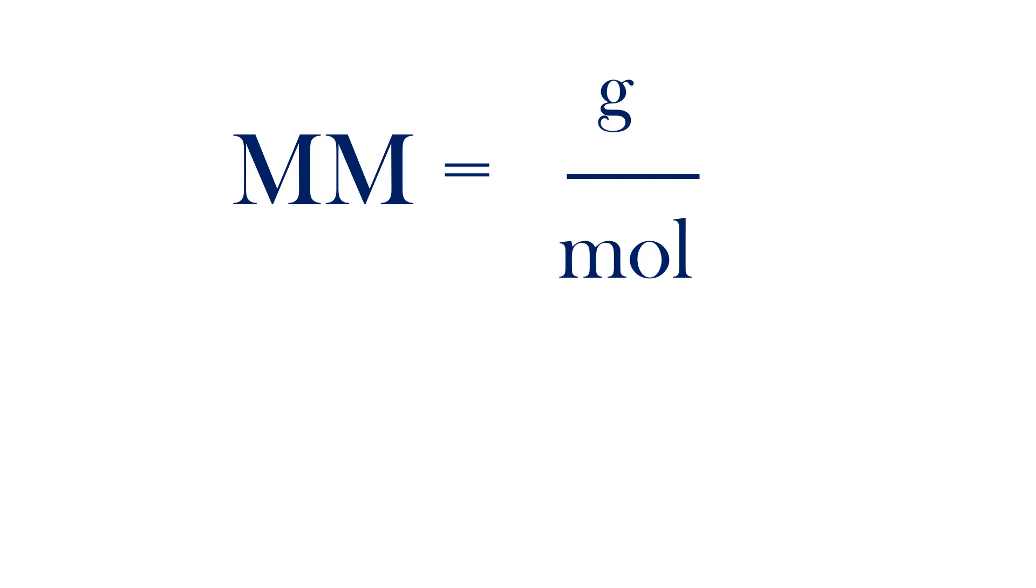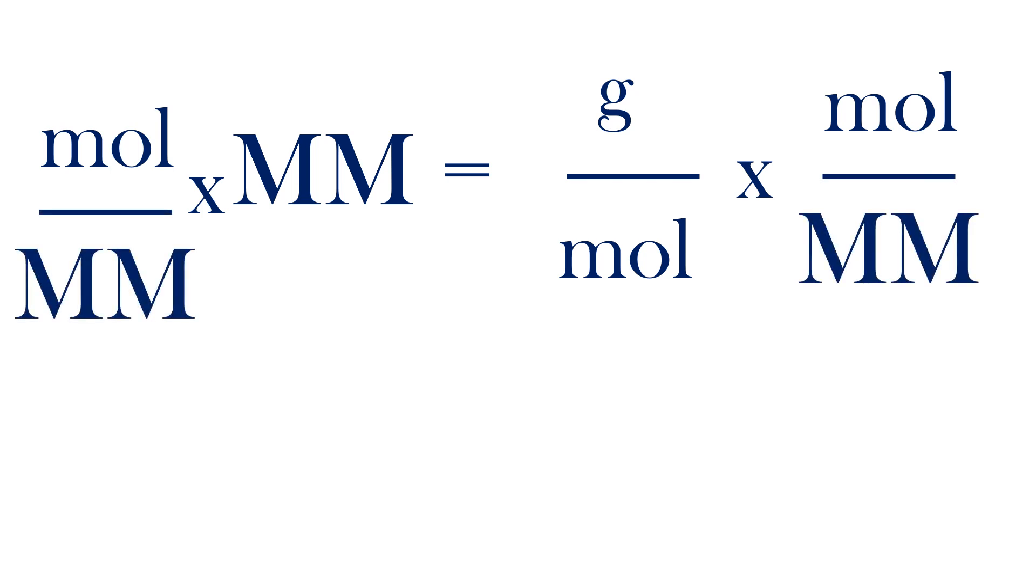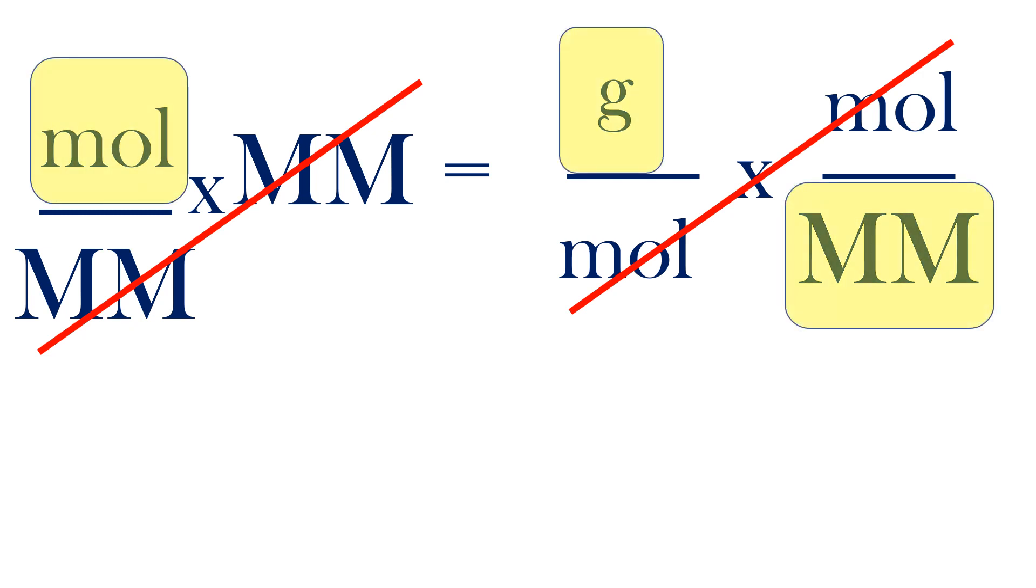Let's recall that the molar mass is grams per mole. Let's multiply both sides by the moles and divide both sides by the molar mass. Notice the terms cancelling leaves us with moles equals grams over molar mass.